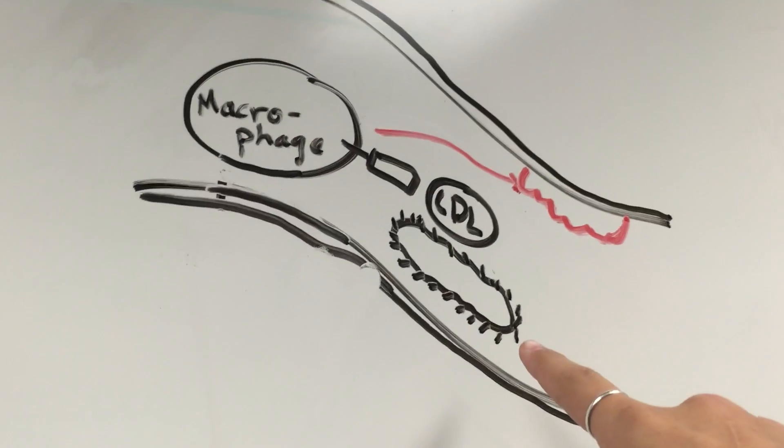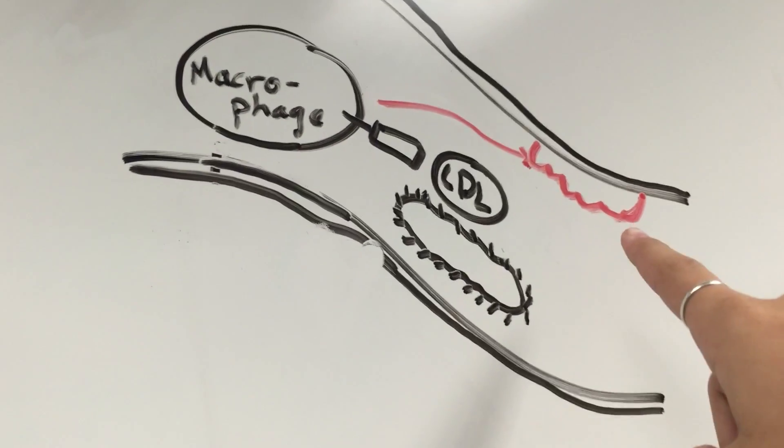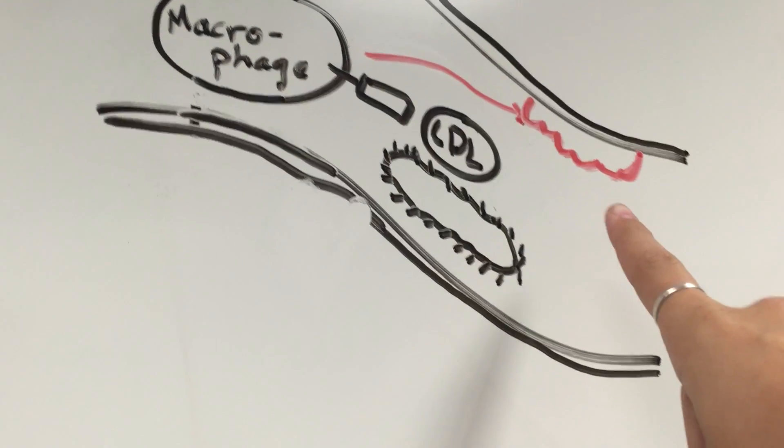This causes the macrophages to turn into foam cells, which are bubbly, sticky cells that attach to the sides of arteries.